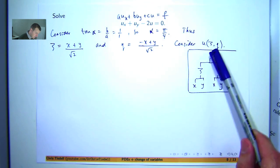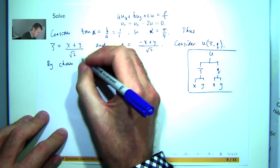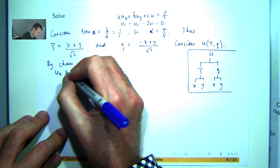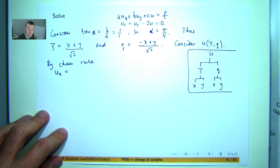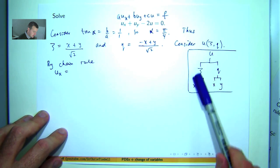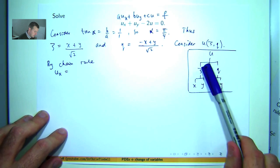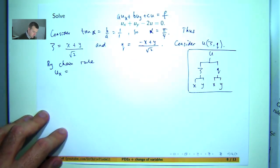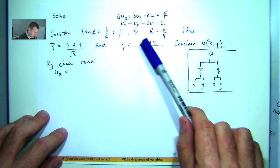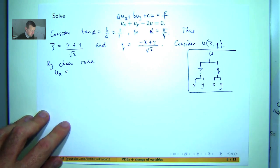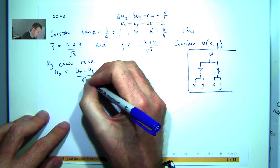Suppose we wanted to compute u_x. You start at the top and find all the paths to x. When you go from letter to letter, you form a derivative. So u_x equals u_psi times psi_x plus u_eta times eta_x. We don't know u_psi, but psi_x will be 1 over root 2, and eta_x is negative 1 over root 2. Combining those, we get the following expression.